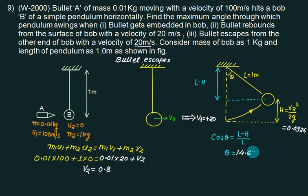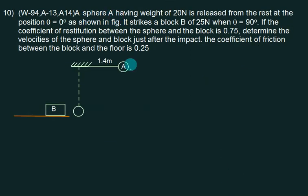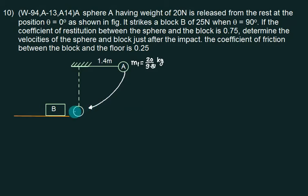New problem: Sphere A has a weight equal to 20 N, so mass m1 equals 20 divided by 9.81 kg. It is released from rest and swings as a pendulum, acquiring velocity before impact. The block at the impact position is stationary, with mass m2 equal to 25 divided by 9.81 kg.